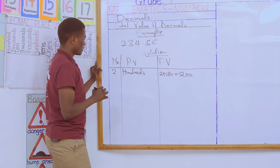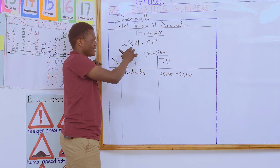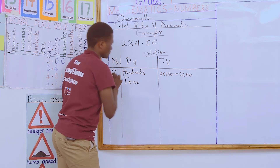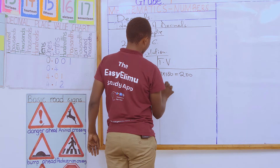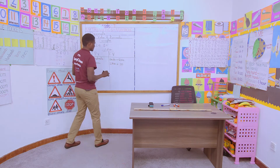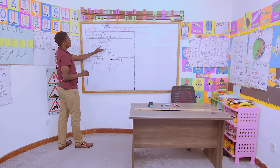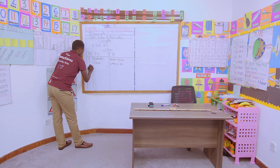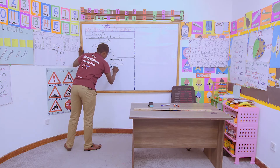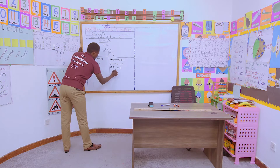The last digit on the whole number part is 4, with a place value of 1s. And the total value will be 4 times 1, which is 4. Then at this point, we have the decimal point.